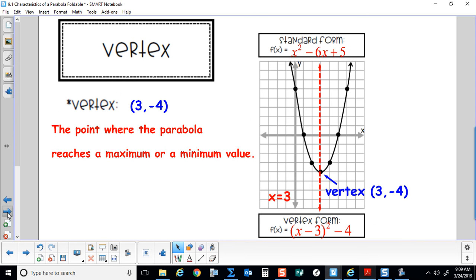The vertex. The vertex in this instance is 3, negative 4, the point where the parabola reaches a maximum or a minimum value. In this instance it's a minimum value.